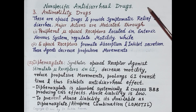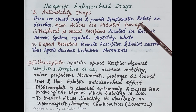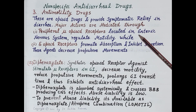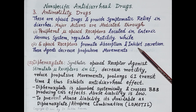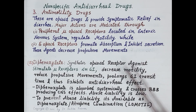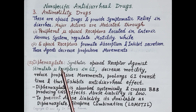Antimotility drugs are opioid drugs that provide symptomatic relief in diarrhea. Their major action is mediated through peripheral mu opioid receptors located in the enteric nervous system. Stimulation of mu opioid receptors decreases motility. These drugs also act on delta opioid receptors, which promote absorption and inhibit secretion. By reducing motility, they decrease propulsive movements. The two main drugs are diphenoxylate and loperamide.